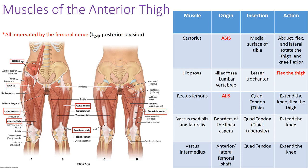Next, we have the iliopsoas, which is made up of two muscles: the iliacus, sitting on the interior aspect of the ilium, and the psoas major. Together, they originate from the iliac fossa and lumbar vertebrae. The insertion is onto the lesser trochanter of the femur. The iliopsoas is the primary flexor of the hip.